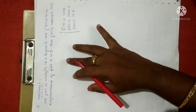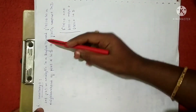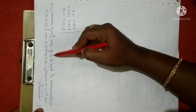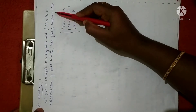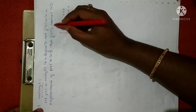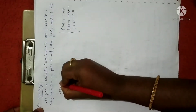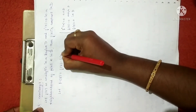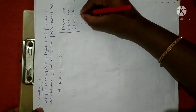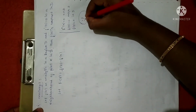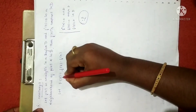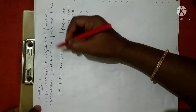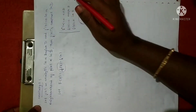Now for corollary one: f(z) is analytical in region D and f'(z) is 0 in a neighborhood of a point A in D, then we have to prove that f(z) is constant. Let us define a capital F(z) as the difference of this function and its value at a neighborhood point. Suppose we have a complex plane, z is any point, and A is a neighborhood of this point.